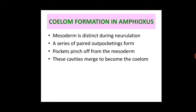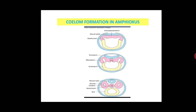The coelom is a body cavity lined by mesoderm, and it develops during neurulation. Delineation of the mesoderm also occurs during neurulation. A series of paired outpocketings form and pinch off from the mesoderm, and these cavities merge to become the coelom. The light pink area represents the mesoderm; pocket formation starts and pinches off, forming the coelom — shown as the white area surrounded by pink cells.